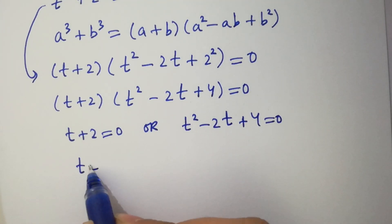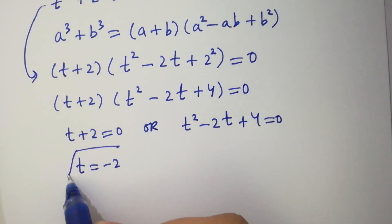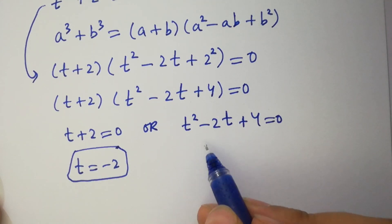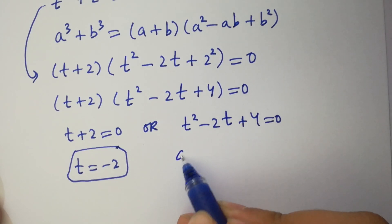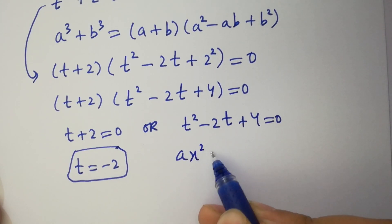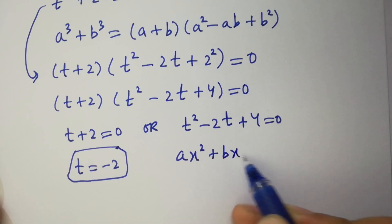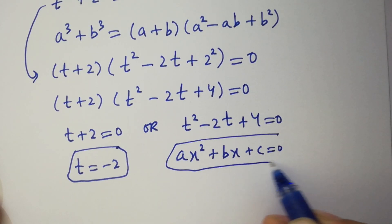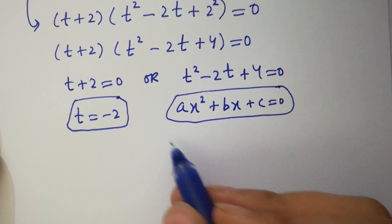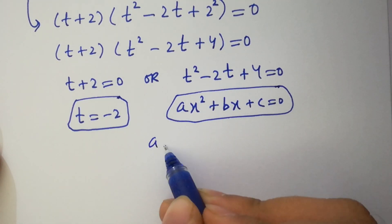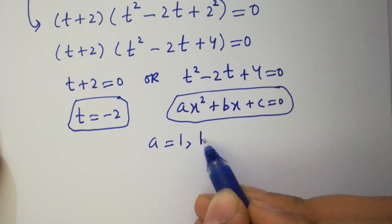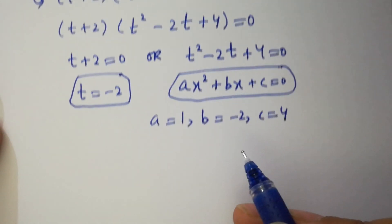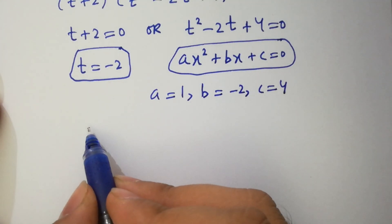t equals minus 2, which is our first real solution. And here, t squared minus 2t plus 4 equals 0 is a quadratic equation of the form ax squared plus bx plus c equals 0. By comparing: a equals 1, b equals minus 2, and c equals 4. Apply the quadratic formula here.